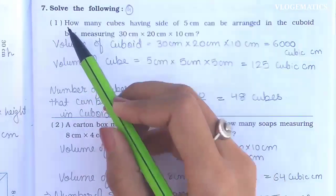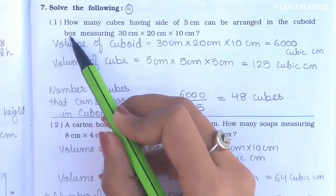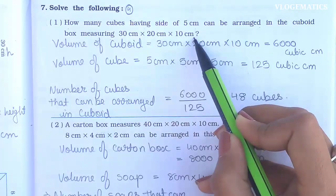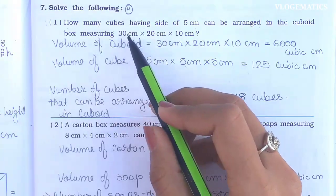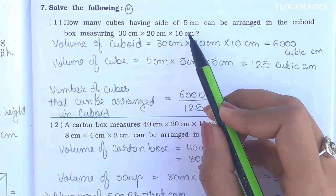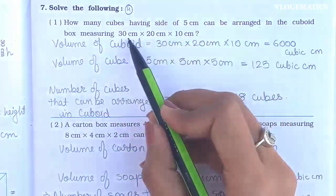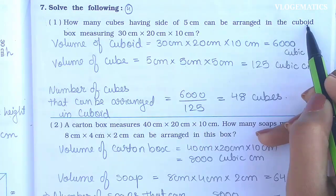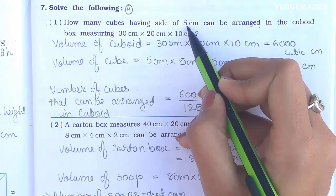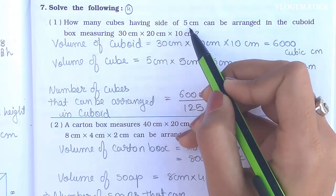Question number 1: How many cubes having a size of 5 cm can be arranged in a cuboid box measuring 30 cm by 20 cm by 10 cm? The cuboid measurement is 30 cm, 20 cm, and 10 cm. We need to find how many 5 cm cubes can be arranged in this cuboid box. We will find the volume of the cuboid box and the volume of the cube, then divide.